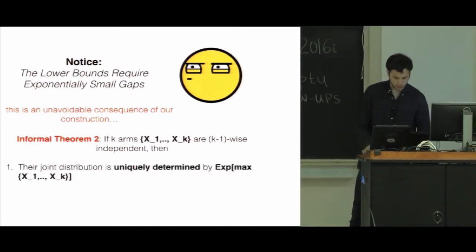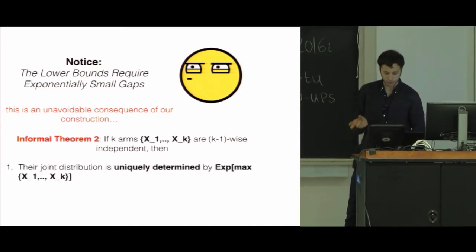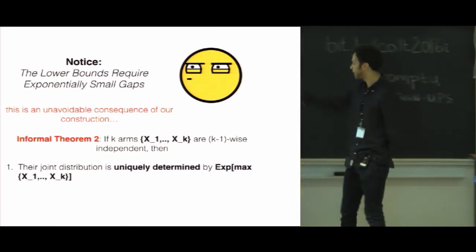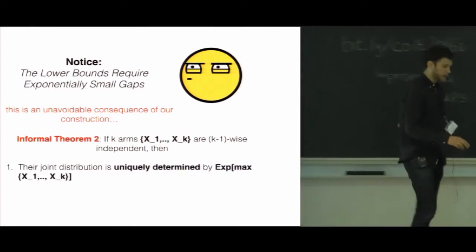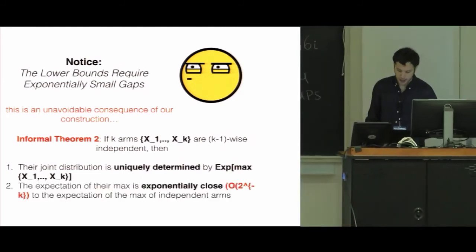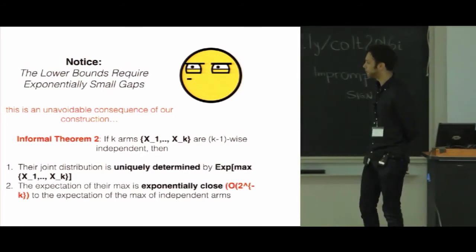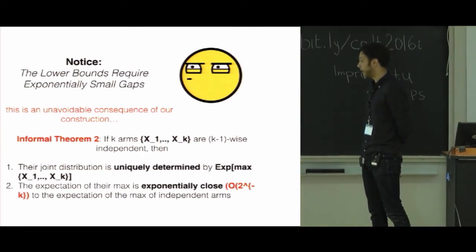Formally, we were able to show that if they have the same marginal and they're k minus 1 wise independent, then their joint distribution is uniquely determined by this quantity we care about, this expectation of their max. And this expectation of their max will be exponentially close to the max of independent arms. And actually, depending on what each arm's mean is, it can be even smaller than that.